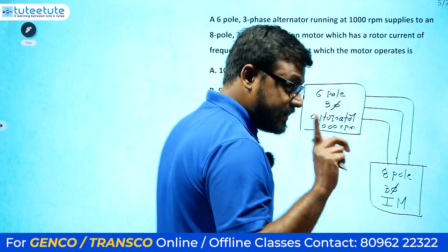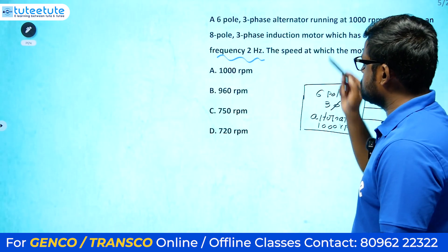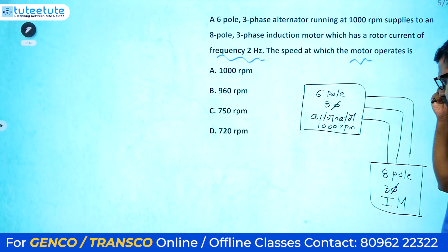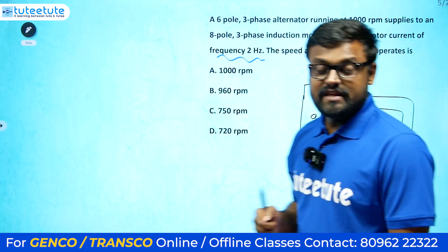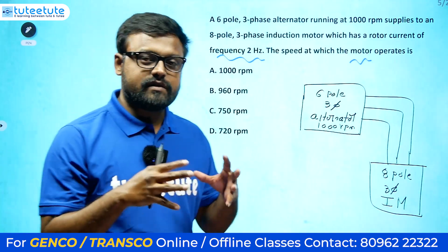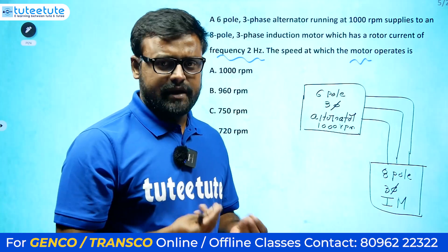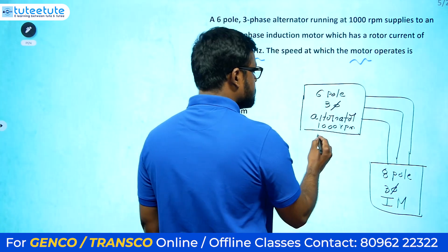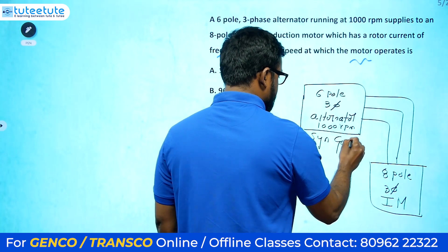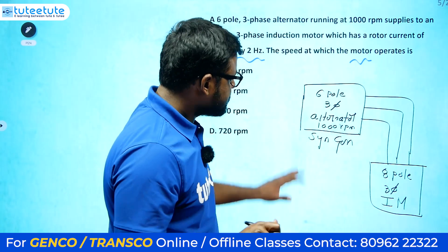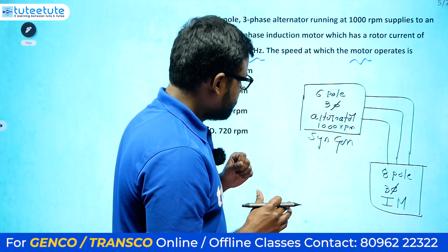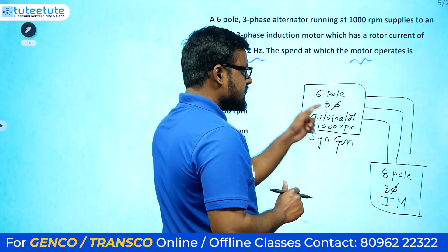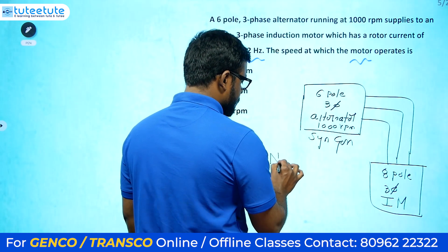The rotor current of the induction motor has a frequency of 2 Hz. We are asked to find the speed at which the induction motor is running. The stator of the induction motor holds the three-phase winding, and the supply comes from this synchronous generator. Let us concentrate on the synchronous generator first — it is a six-pole machine with its rotor running at 1000 rpm.